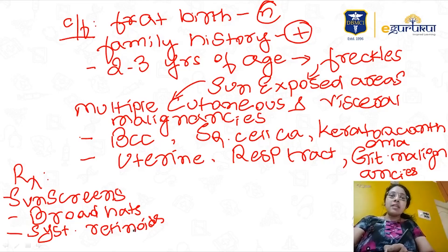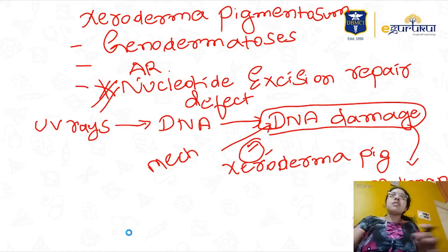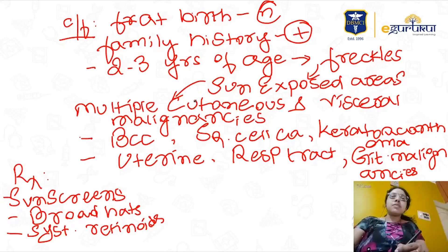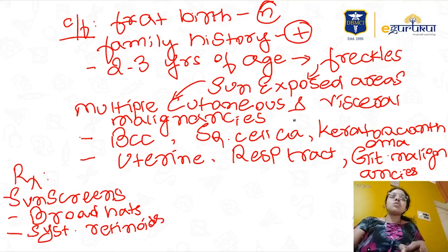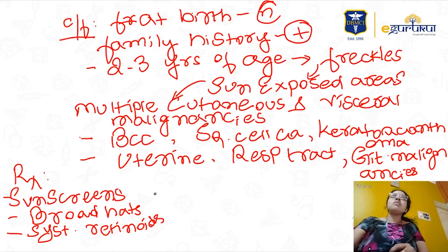Treatment: patients should use sunscreens and prevent sun exposure by wearing broad hats. Systemic retinoids have been tried. In summary: xeroderma pigmentosum is an autosomal recessive genodermatosis caused by nucleotide excision repair defect, presenting with freckles, photosensitivity, and multiple malignancies.